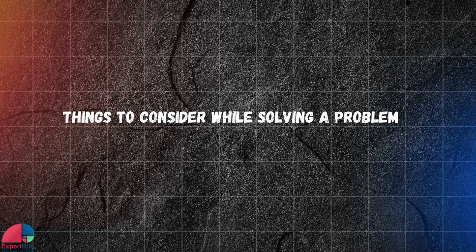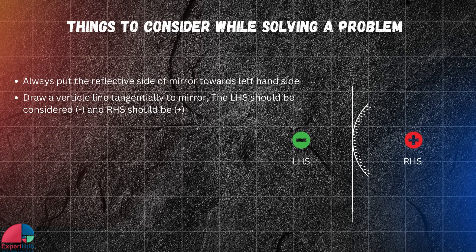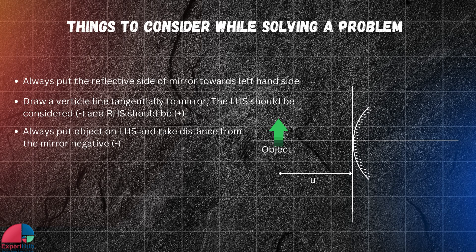Here are some important things to consider while solving a problem. Always put the reflective side of the mirror towards the left-hand side. Draw a vertical line tangentially to the mirror. The left-hand side should be considered negative and the right-hand side should be positive. Always put the object on the left-hand side and take its distance from the mirror as negative.